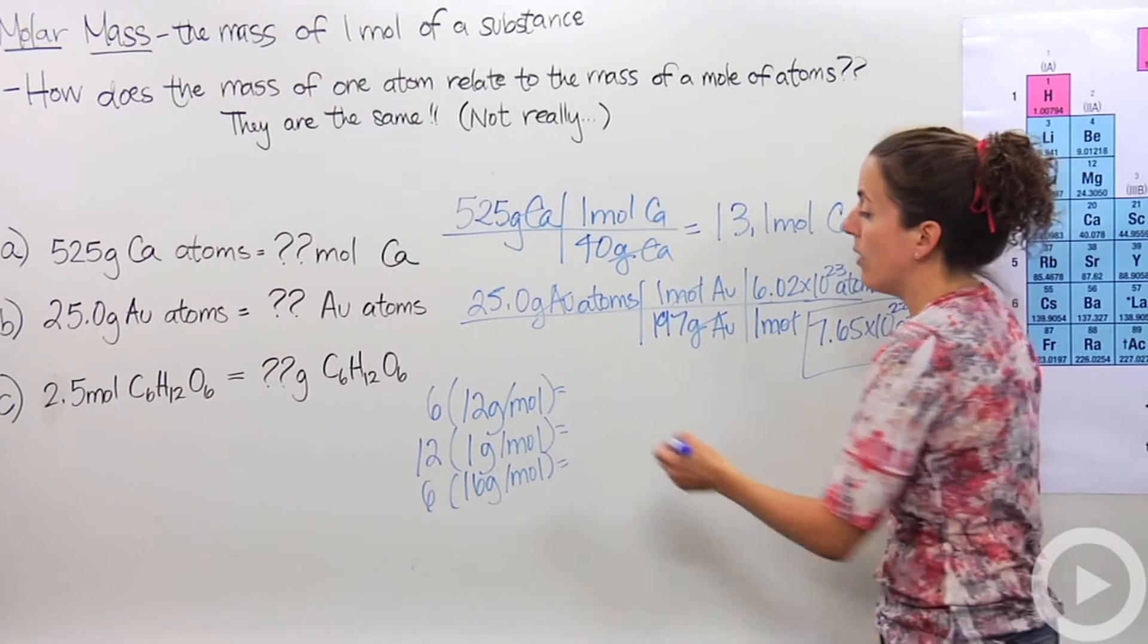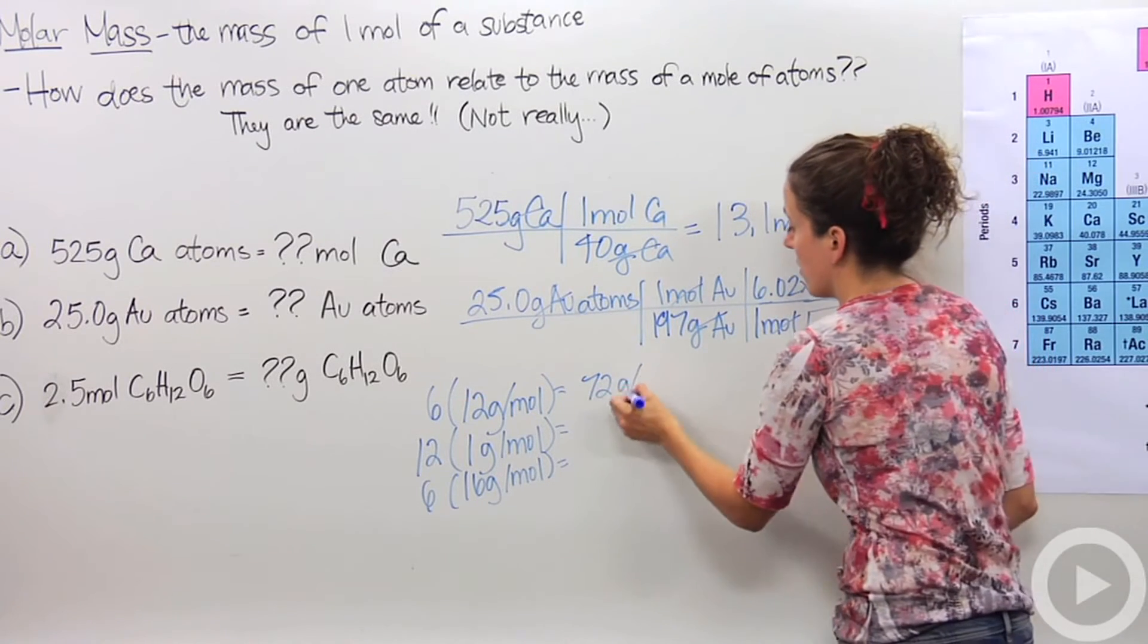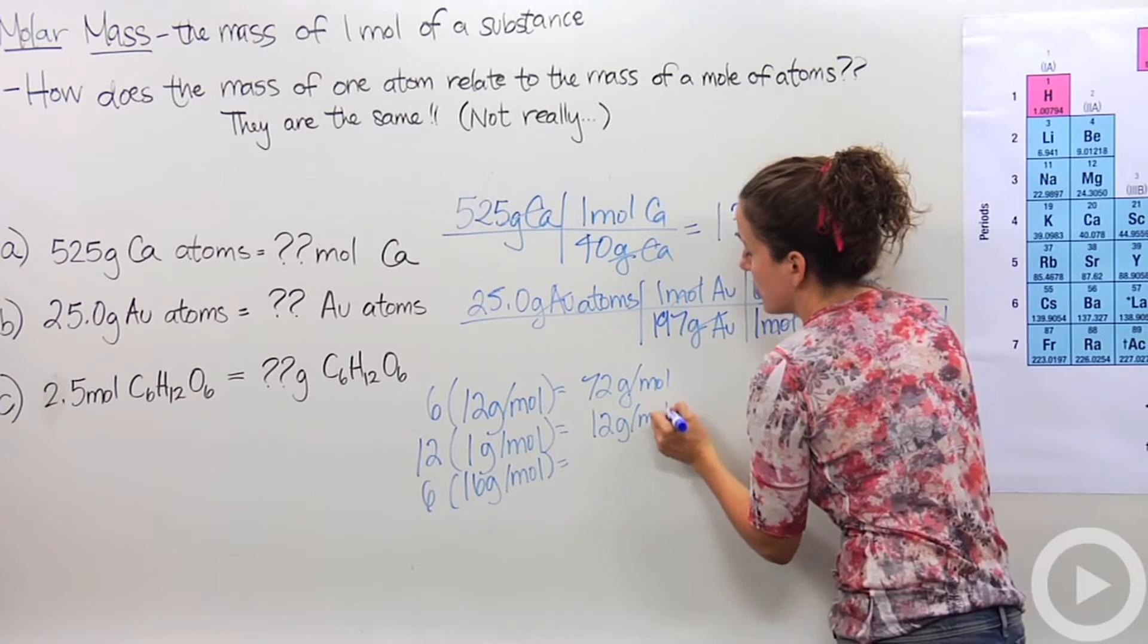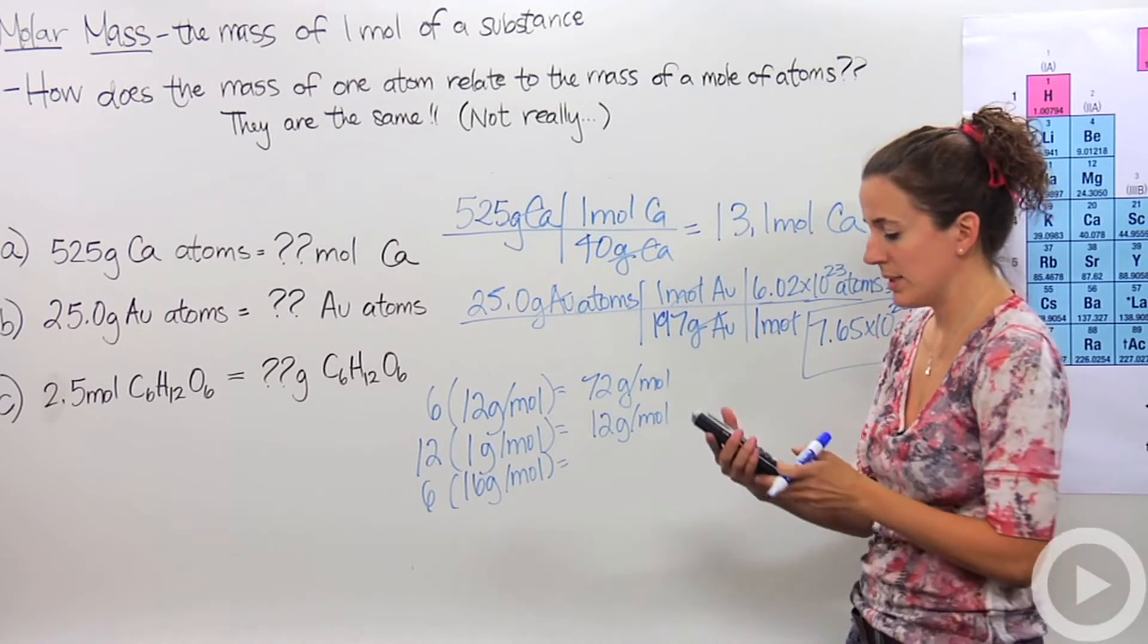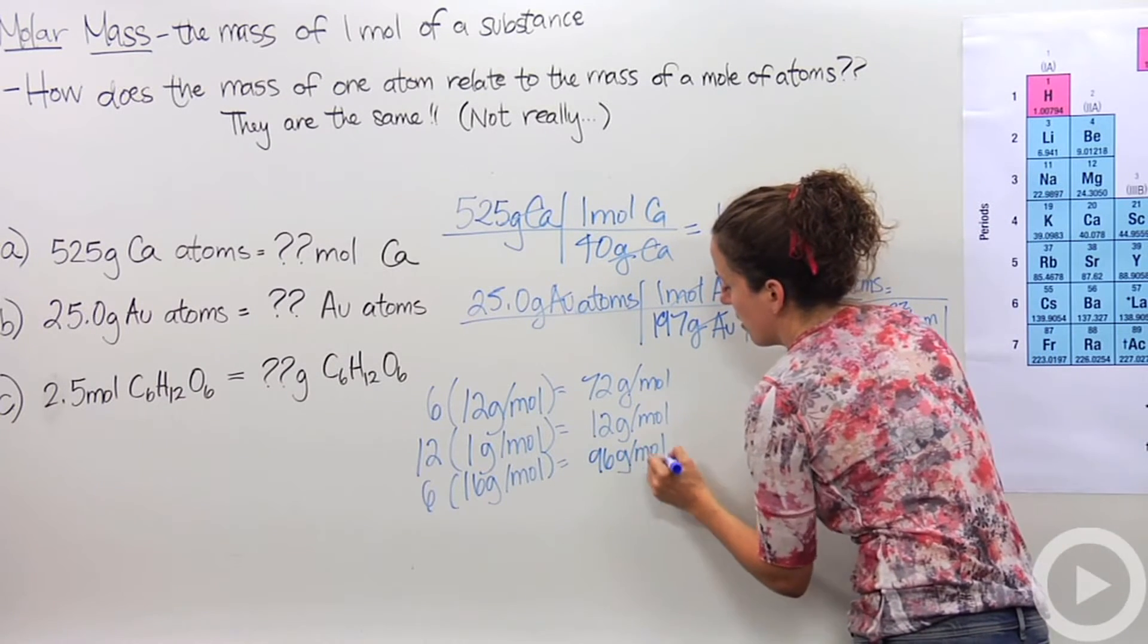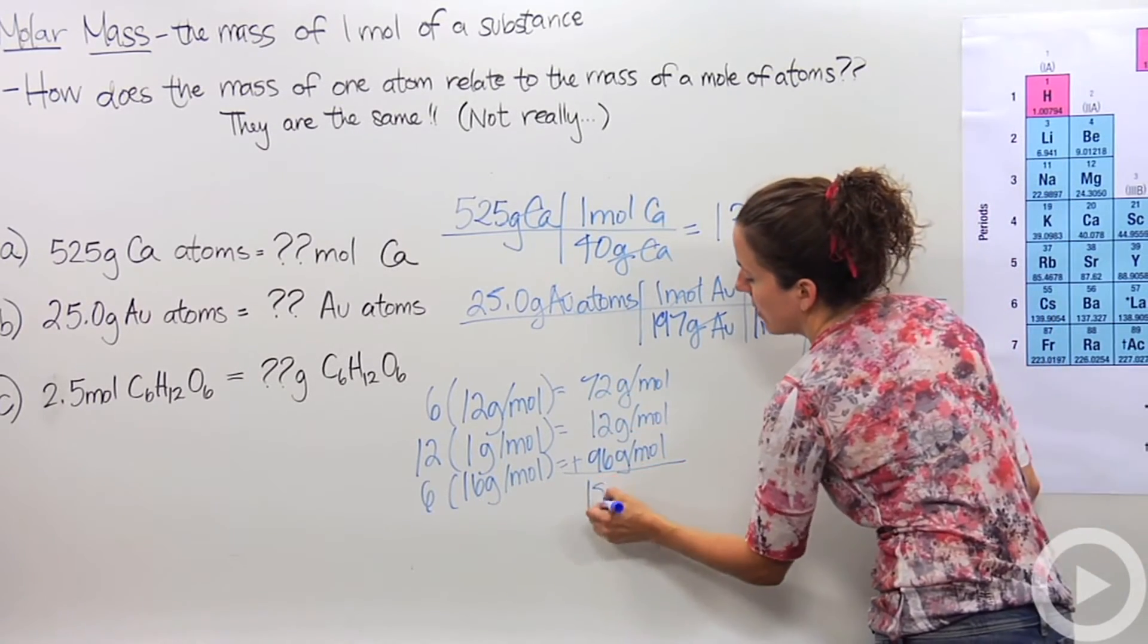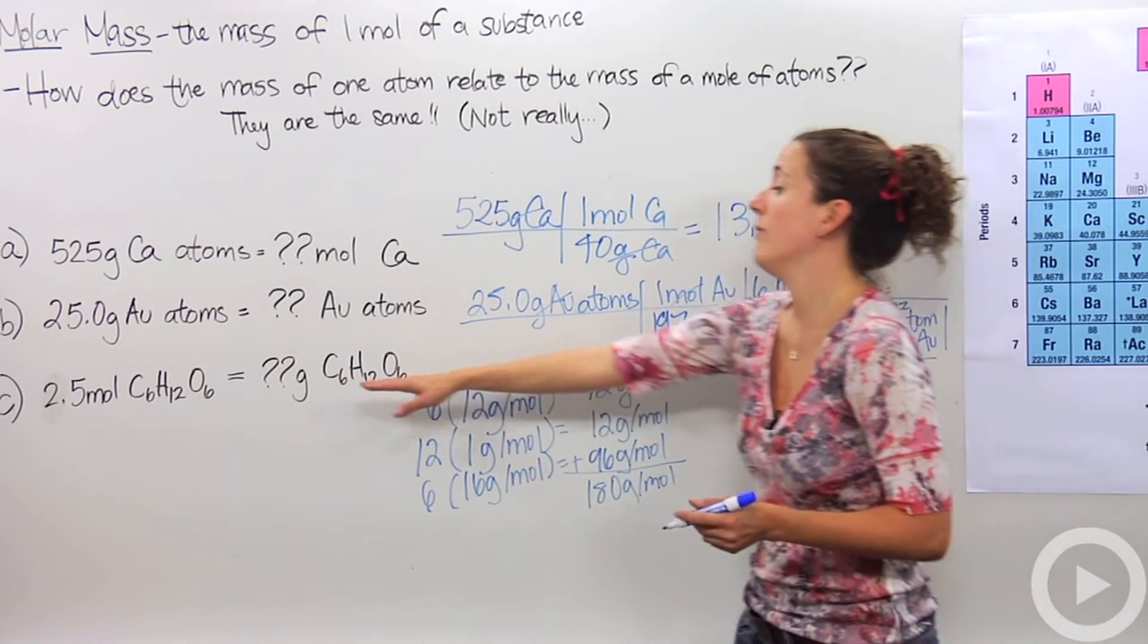Okay. So, 6 times 12. We're going to multiply them together. 6 times 12 is 72. So, I have 72 grams of carbon for every mole of glucose. I have 12 grams of hydrogen. And I have 6 times 16, which is 96 grams per mole. Alright. Since they're all together in one compound, I'm going to add them all up. 72 plus 12 plus 96 is 180 grams per mole.